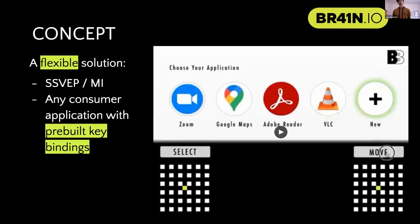On the right, you can see an example wireframe of an application which we would have liked to have made but did not have the time. This is implemented using SSVEP. The bottom right-hand corner would be flashing at a particular frequency, for example 12 hertz, and that would control the move command. The bottom left-hand corner would be flashing at, for example, 18 hertz, and that would control the select command.